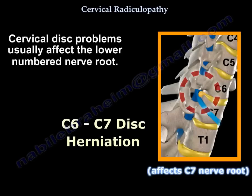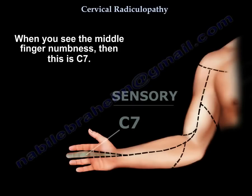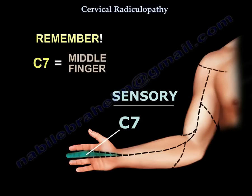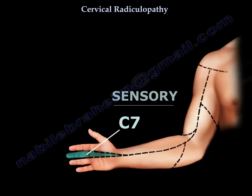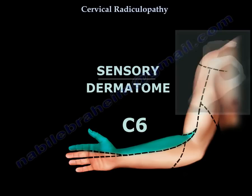Cervical disc problems usually affect the lower numbered nerve root. For example, a C6-C7 herniation will affect the C7 nerve root. When you see middle finger numbness, it is C7 — just remember, C7 is the middle finger. Going one way on the fingers will be C6, and the other way will be C8.